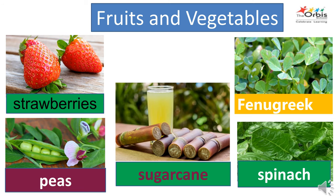Fruits and vegetables grow well during a particular season. What kind of food do we get during the spring? Strawberries, peas, sugar cane, spinach, fenugreek and many more.